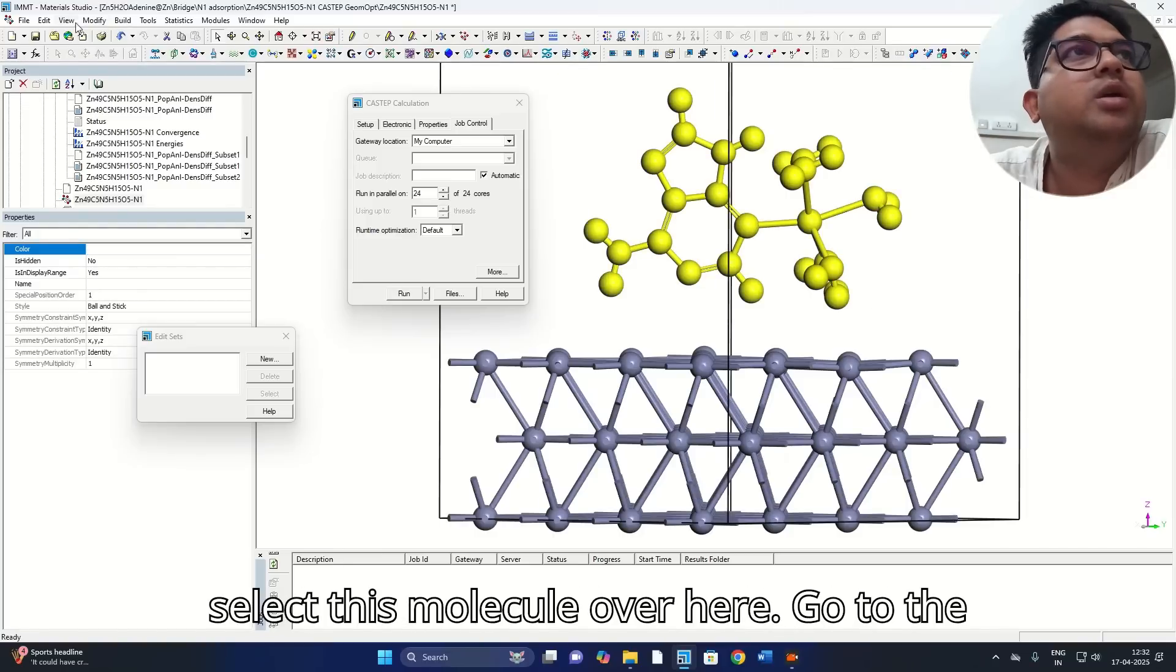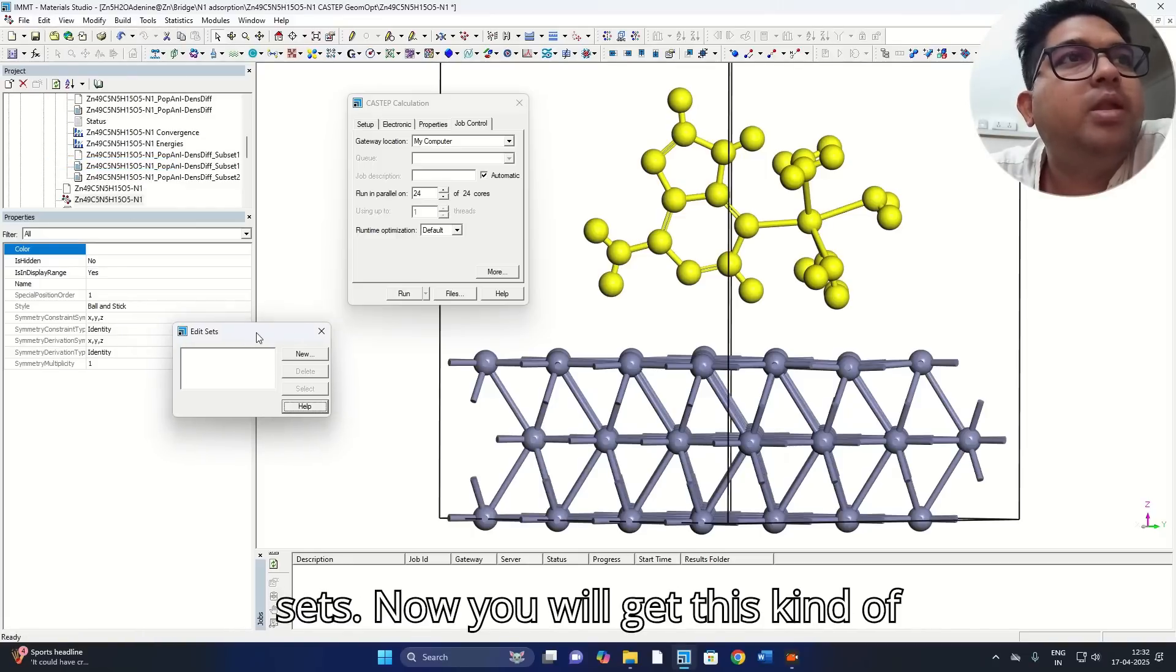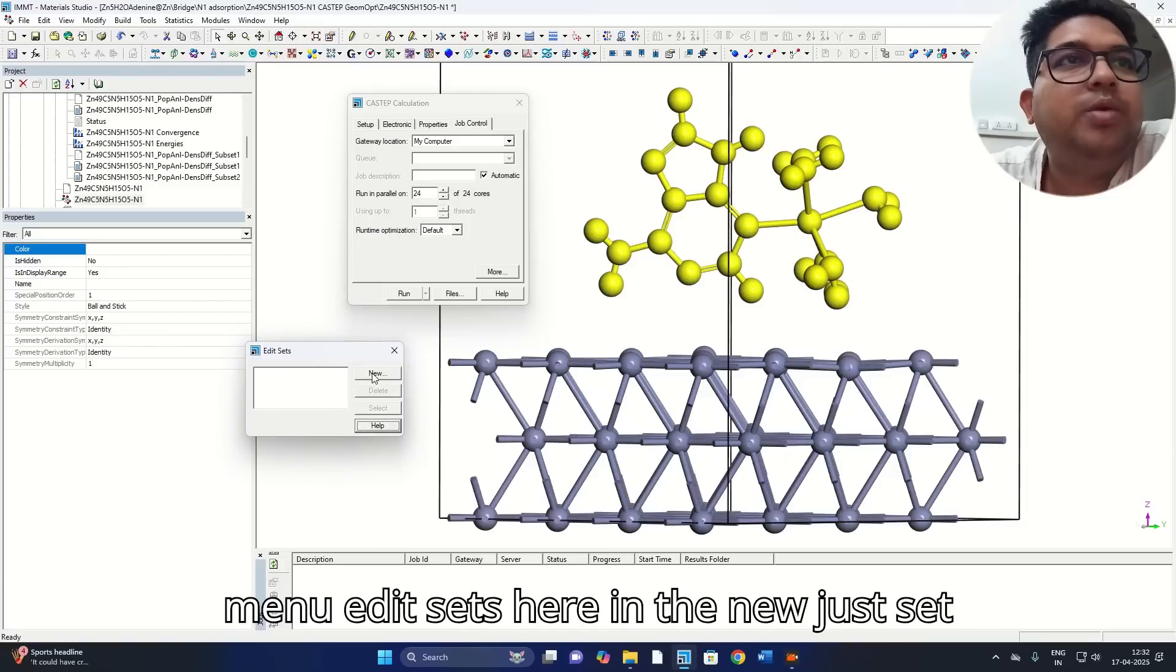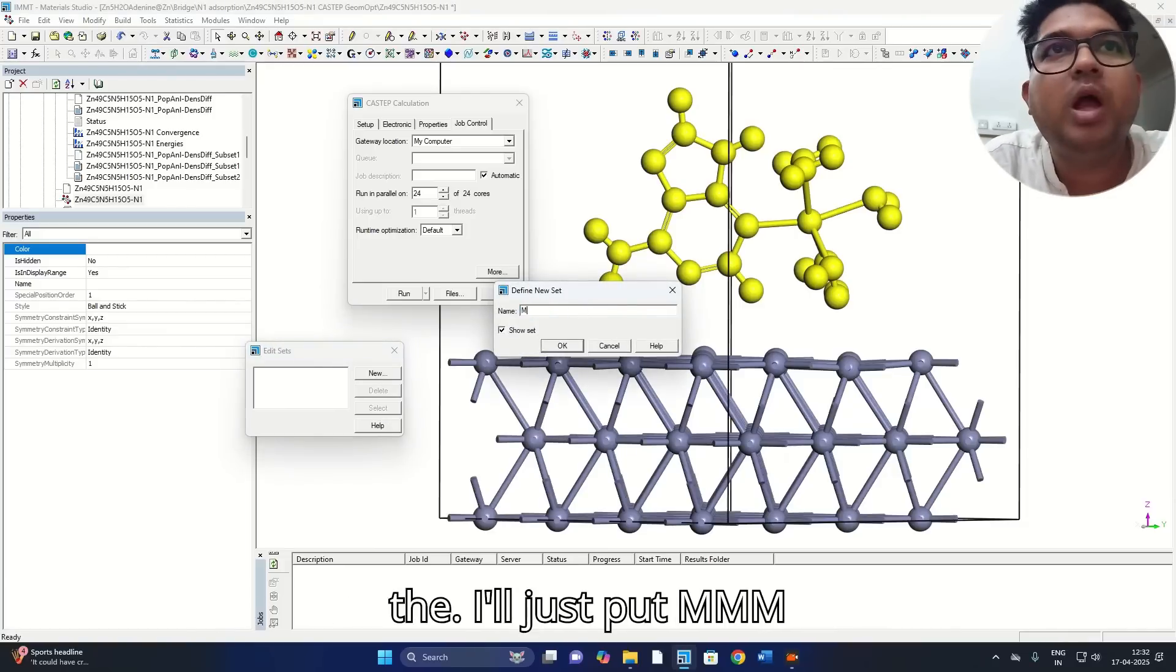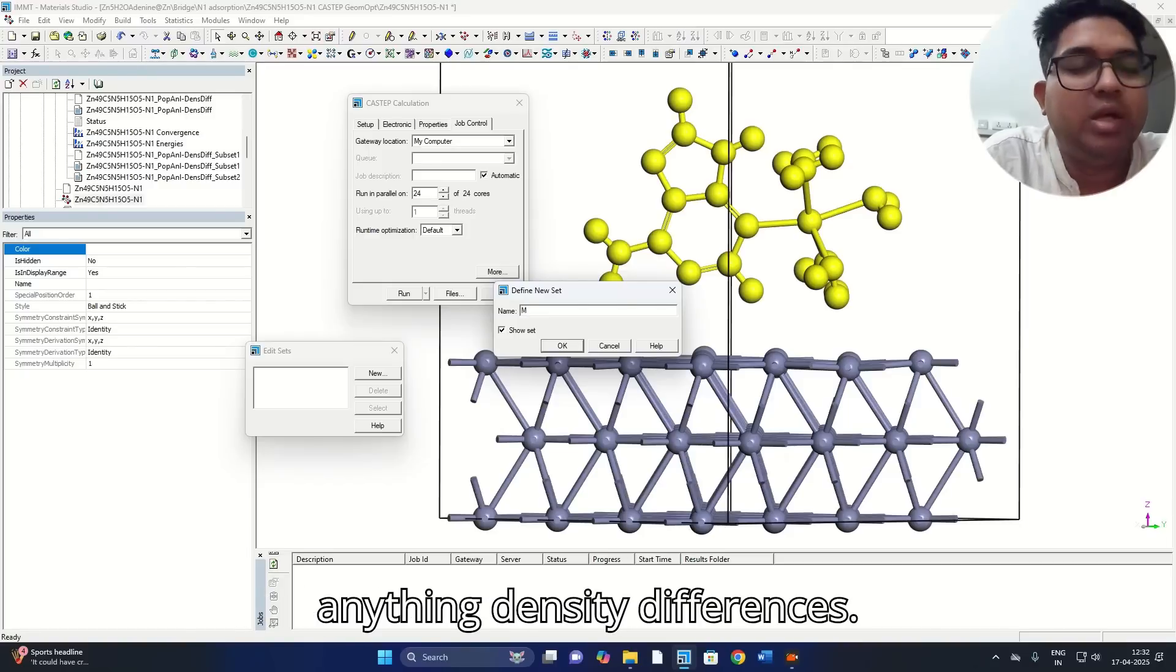So what we'll do, we'll select this molecule over here, go to the edit menu. Here we'll go to the edit sets. Now you'll get this kind of menu, Edit Sets. Here in the new, I'll just put M and this is for the molecule. You can put anything, density differences.